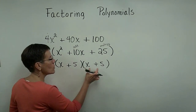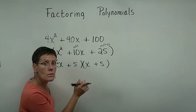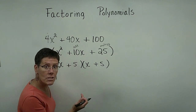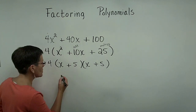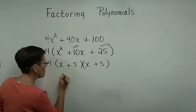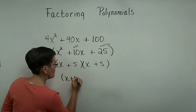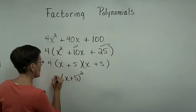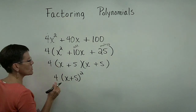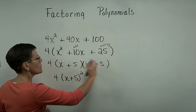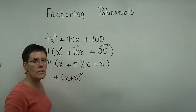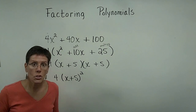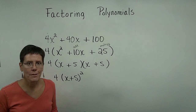If your two binomials are identical, you may write them as a squared binomial — 4(x + 5)². Either form, whether handwritten or entered into a computer system, should be acceptable.